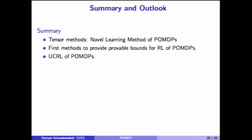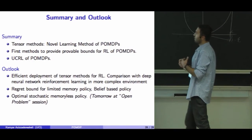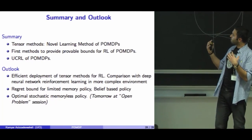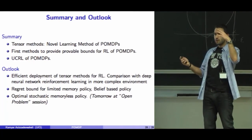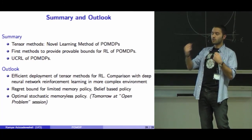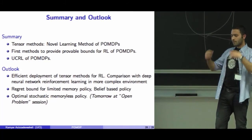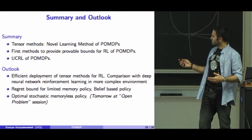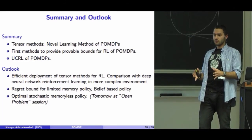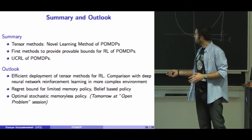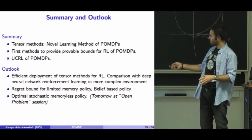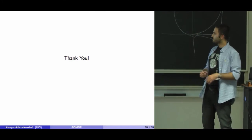In summary, in this work we propose a new method and prove the best regret bound for this problem. We propose a new exploration-exploitation trade-off for POMDP. Our goal in future work is applying this method to larger games and comparing it to DQN. We are also going to extend this memoryless policy-based work to limited memory or even belief-based policies. For the planning of POMDP in the memoryless setting, we know this is a non-convex optimization problem — I'm going to talk about this tomorrow in the open problem session. Thank you.